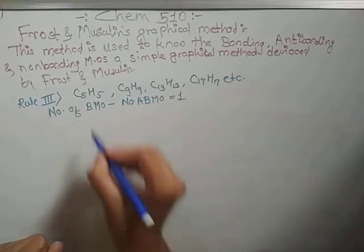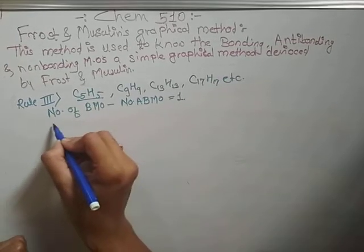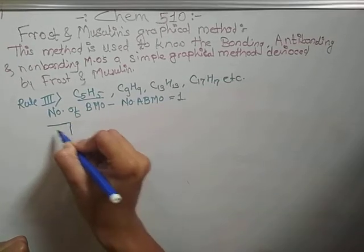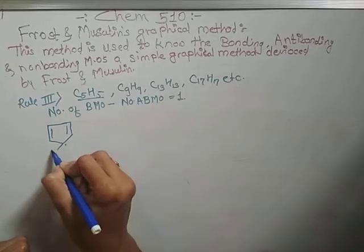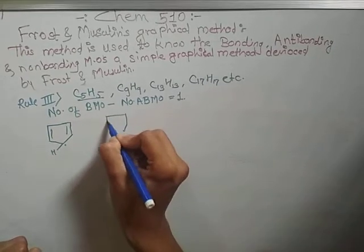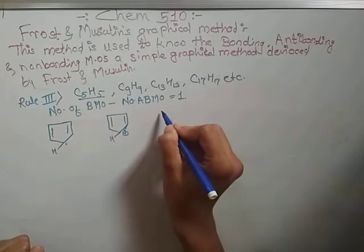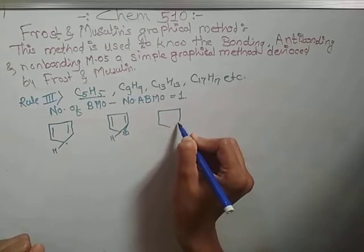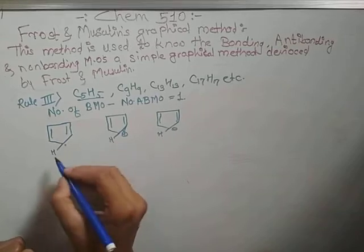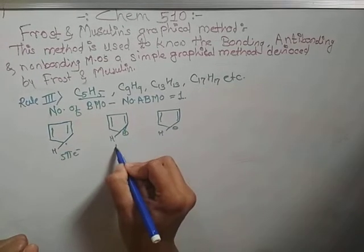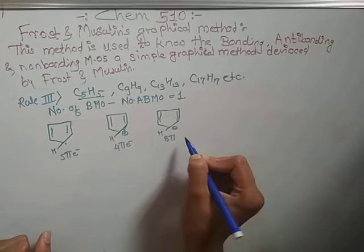For C5H5, cyclopentadiene: the radical has 2+2+1 = 5 pi electrons, the cation has 4 pi electrons, and the anion has 2+2+2+2 = 8 pi electrons. Now draw the circle with 2m radius and inscribe the pentagon polygon.